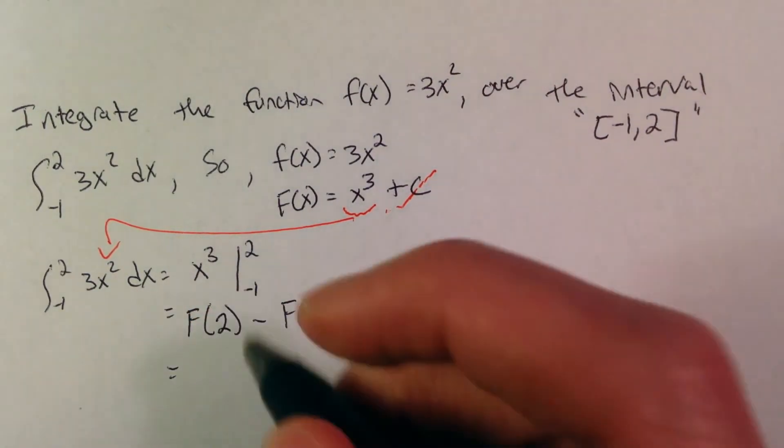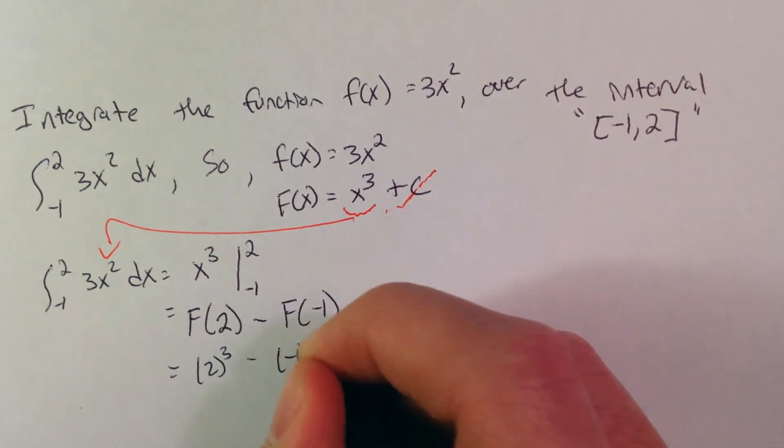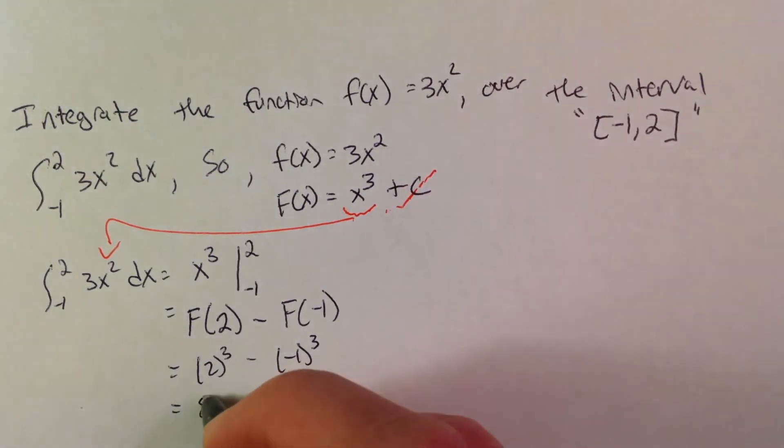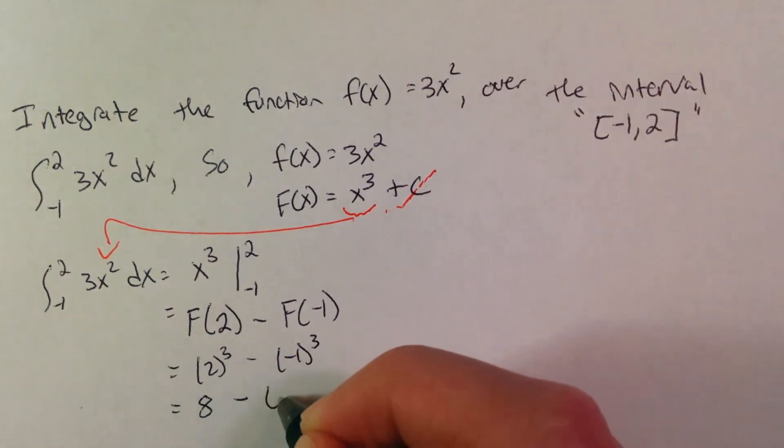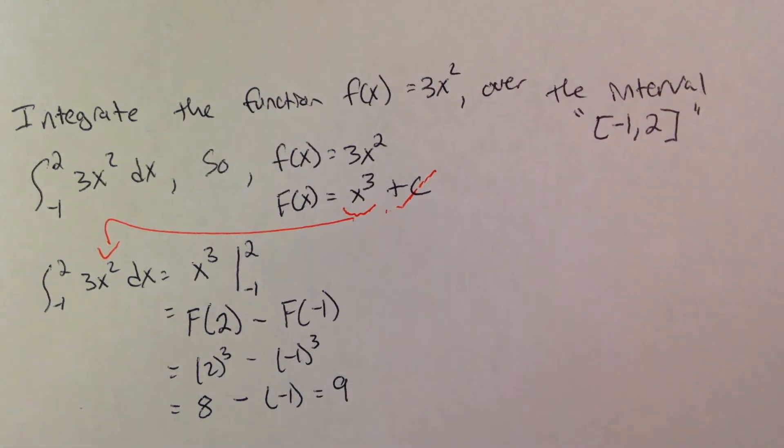From there, 2 in for x gets us 2 cubed minus negative 1 cubed. Well, 2 cubed just ends up being 8. Negative 1 cubed is negative 1, but 2 wrongs make a right, so we have 9.